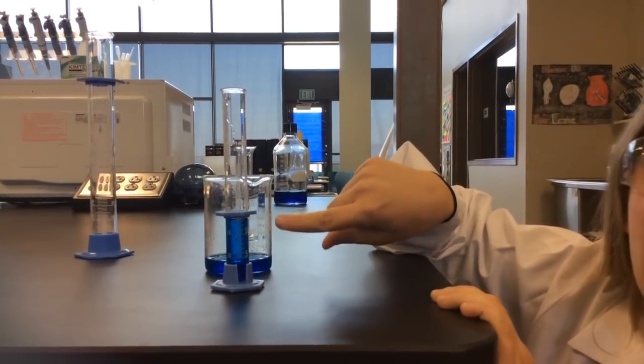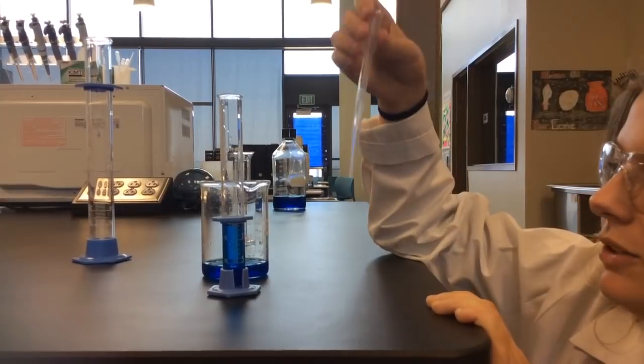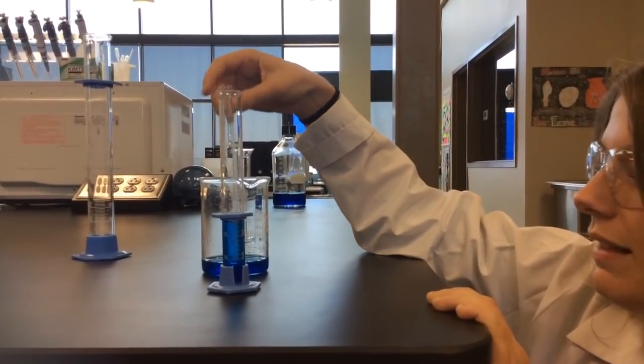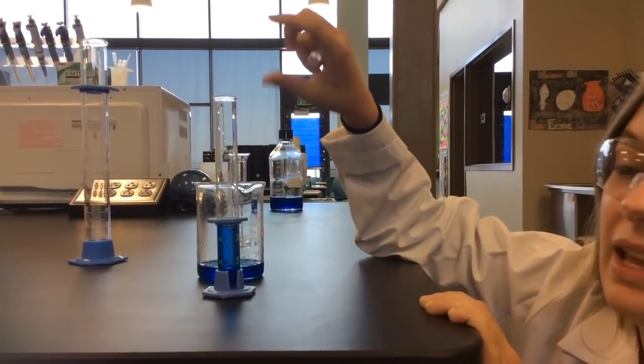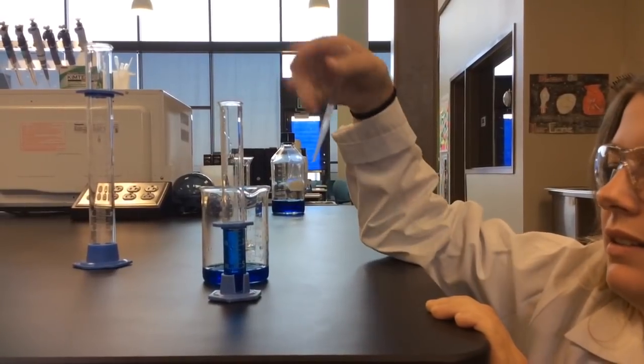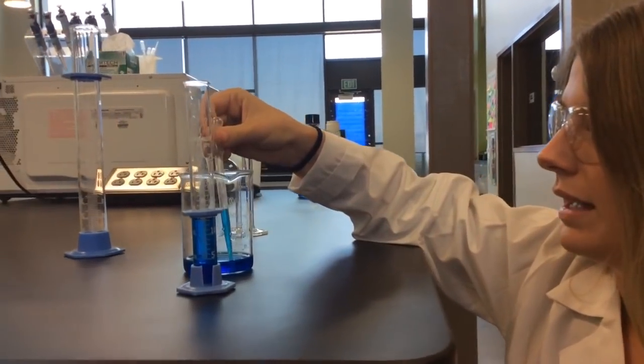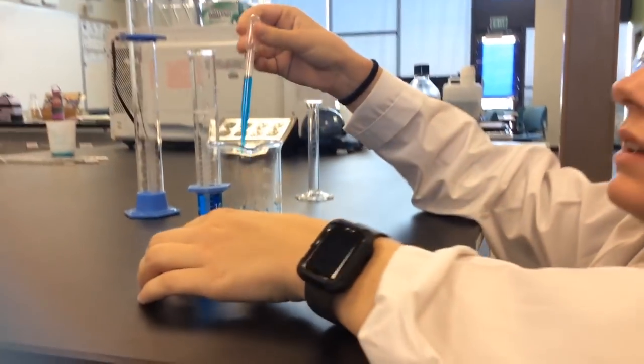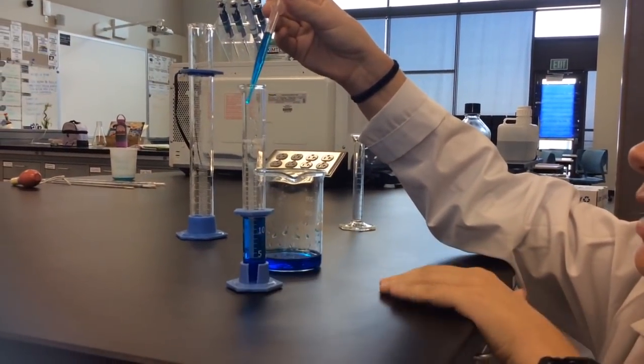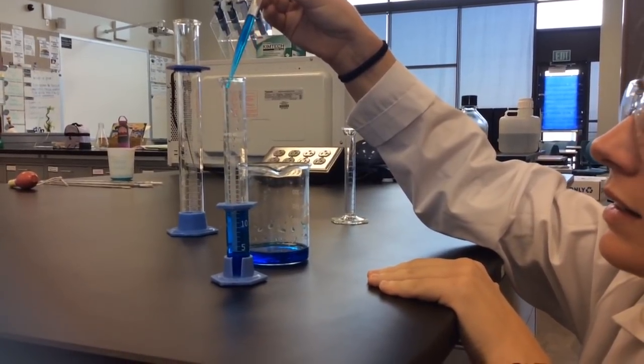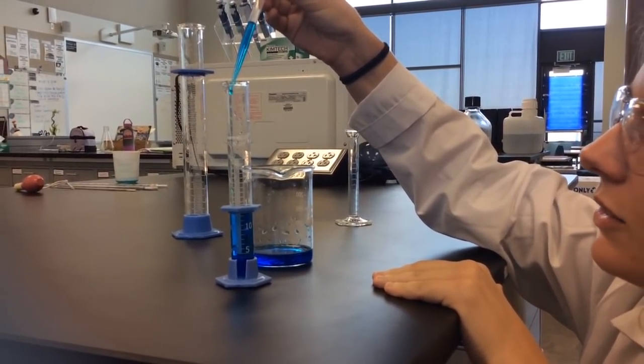So you pour really closely to what you want it to be, and then use a transfer pipette to get the last little bit. Because if you just pour it in, it's going to go way over, and then you have way too much solution. So what we can do is, with this, pick up some solution and carefully just do drops until we get to what we need.